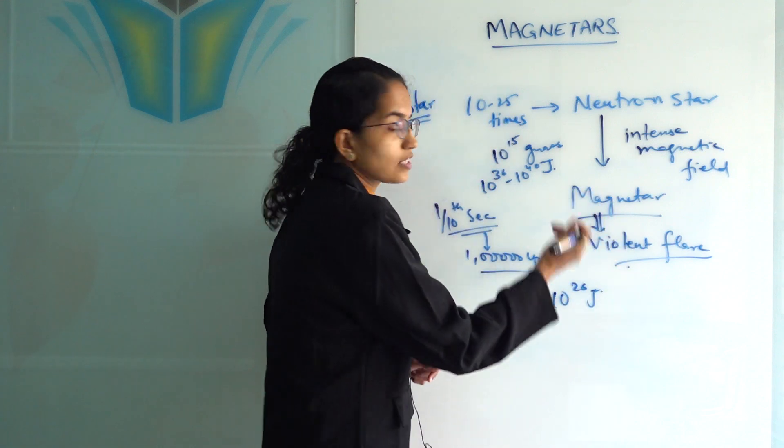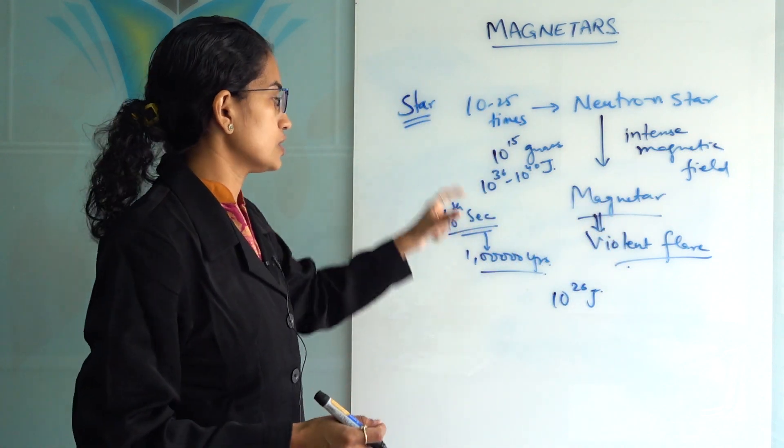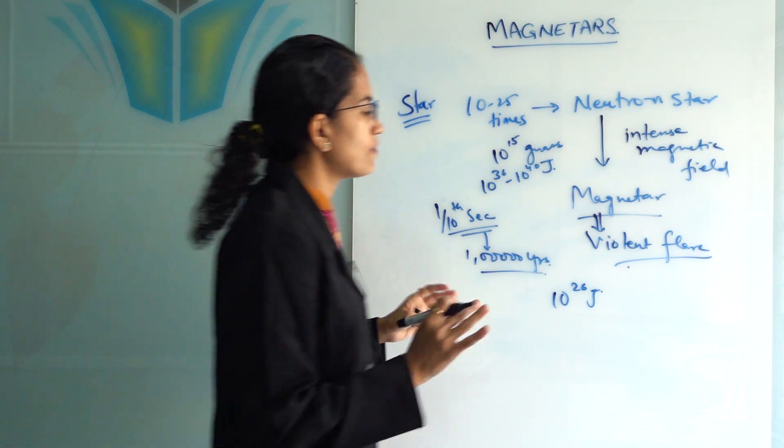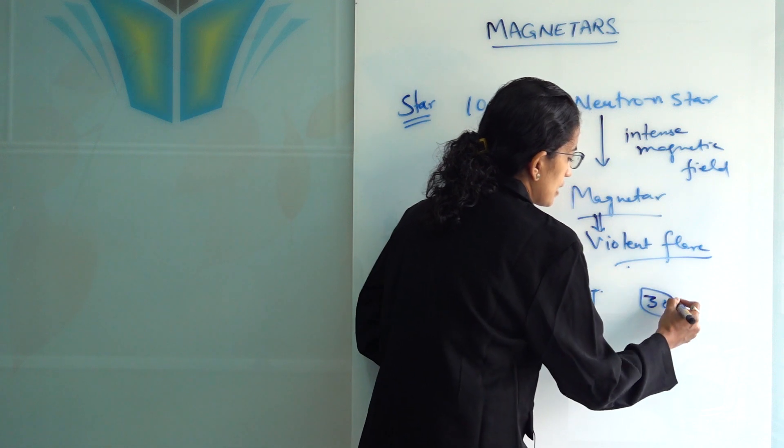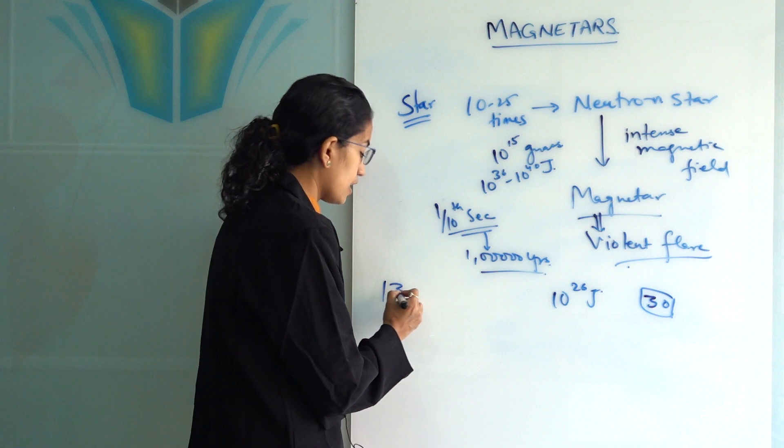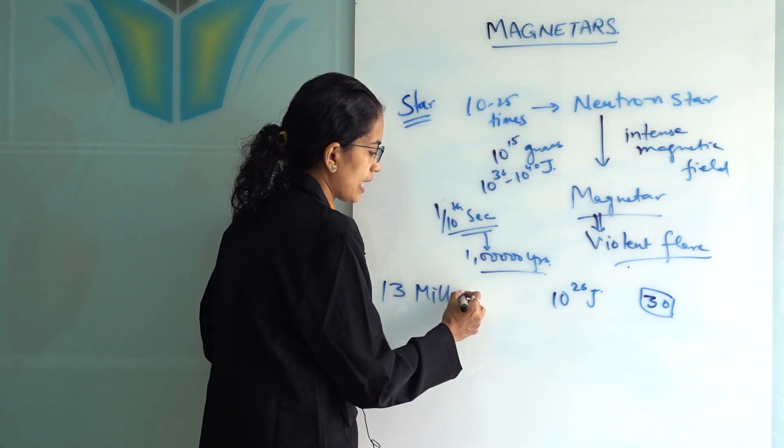Understanding the magnetar: we have identified so far only 30 magnetars. Of these magnetars, we have seen that they are extremely distant, nearly 13 million light years away.